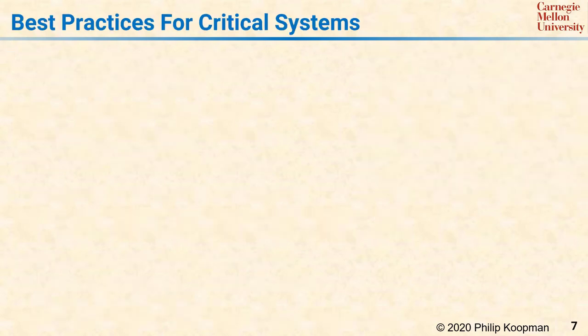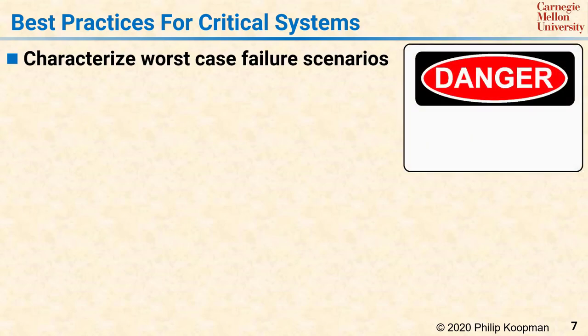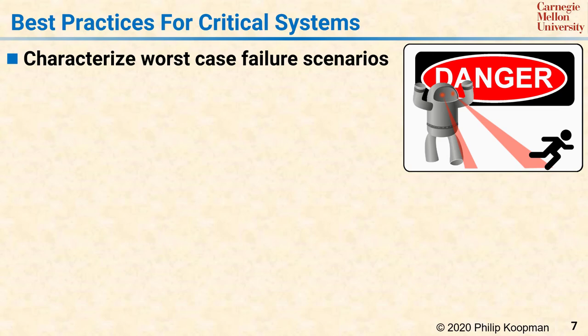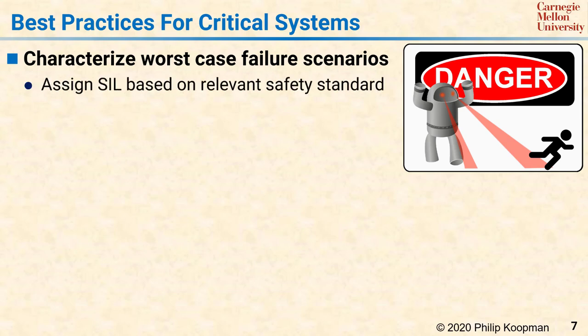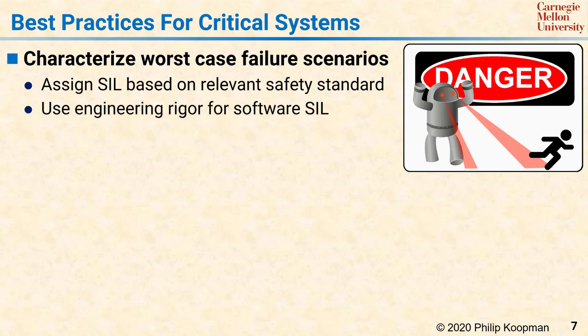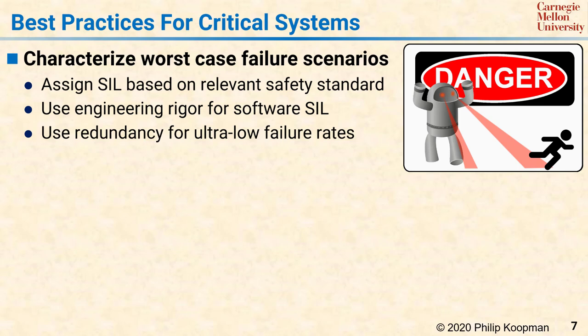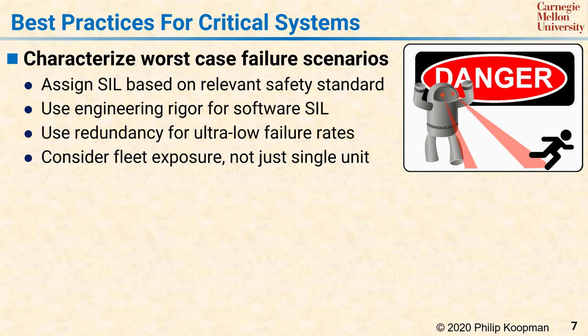The best practices for building critical systems revolve around characterizing the various worst-case failure scenarios. You need to mitigate the absolute worst-case scenarios that could possibly happen, whether or not you intuitively deem them to be likely. Each scenario should be assigned a SIL according to a relevant safety standard, and you should use engineering rigor appropriate for that SIL for both software and hardware redundancy. Finally, consider fleet exposure in terms of the number of failures that will happen across the entire fleet rather than whether any one unit will fail, to ensure a methodical approach to minimizing risk.